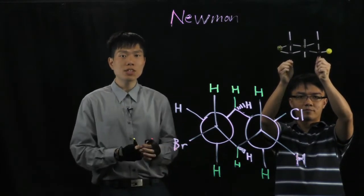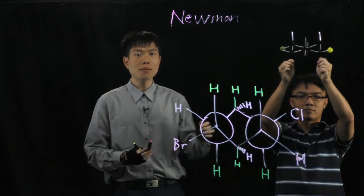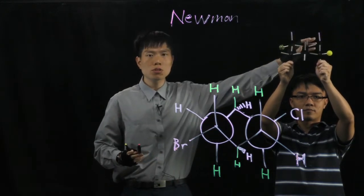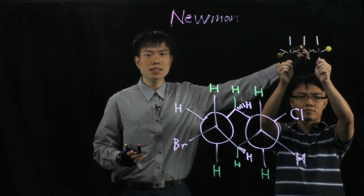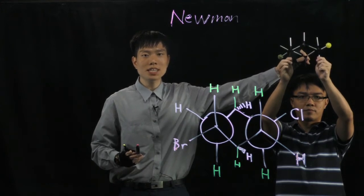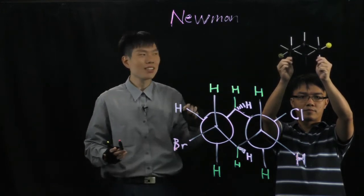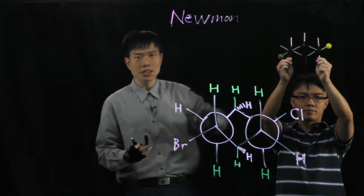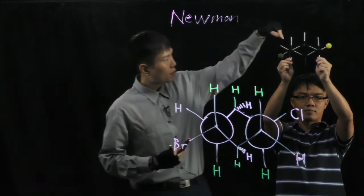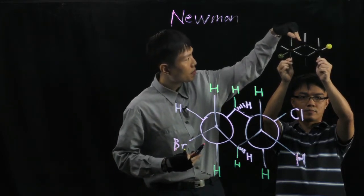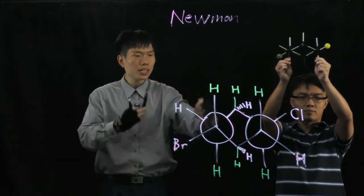Again, you need to look through the carbon-carbon bond, which means we need to tilt it. Now we look through this carbon-carbon bond and you see only 4 atoms here. The front carbon is a V shape at the front.